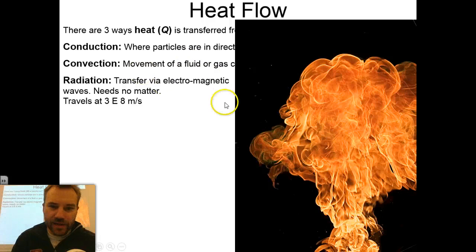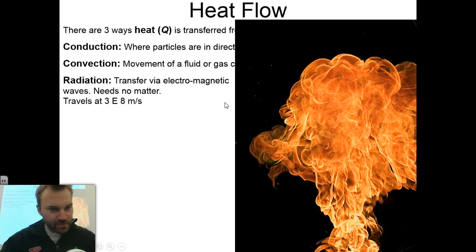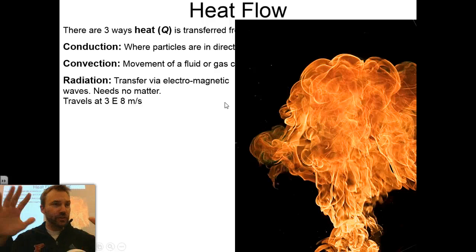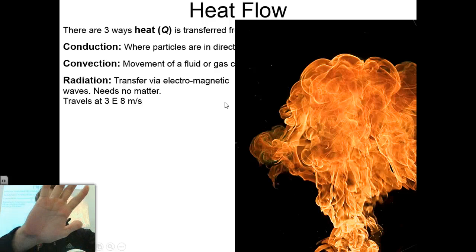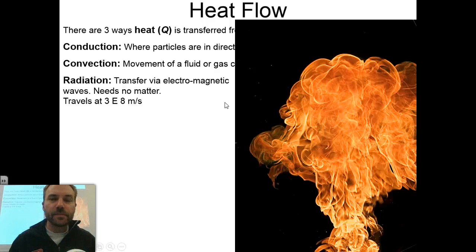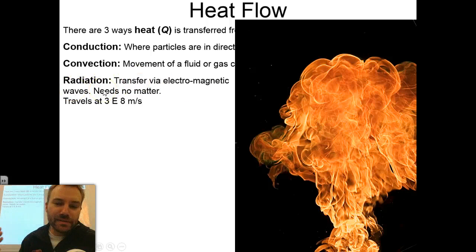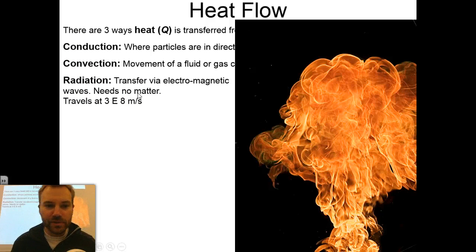And then lastly, radiation. We feel the warm sun, not because we're touching it, and not because there's fluid moving between us, but radiation. Like, you feel a fire from a long ways away, you can physically feel that on your hands and when you look at it on your face, that's called radiation. It's transferred via electromagnetic waves. You don't need any matter. It can go through space. And it travels at the speed of light. It's actually the fastest one. So probably slowest to fastest, slowest conduction, convection being a little bit quicker. Radiation travels at the ultimate speed limit, which is the speed of light, 3 times 10 to the 8th meters per second.